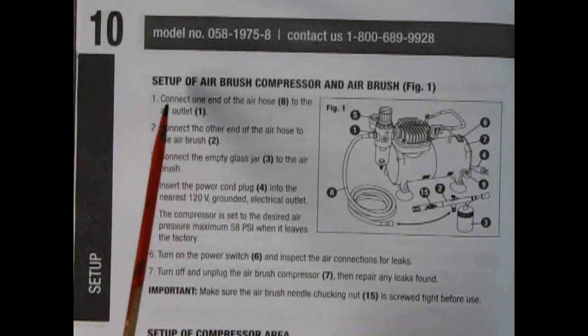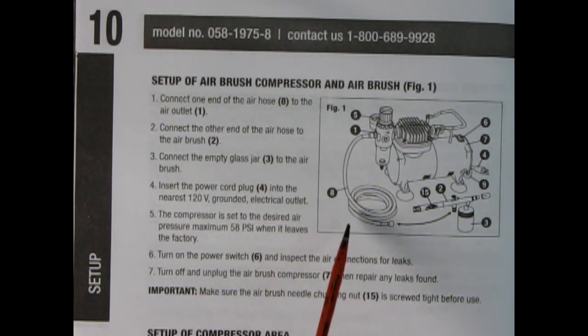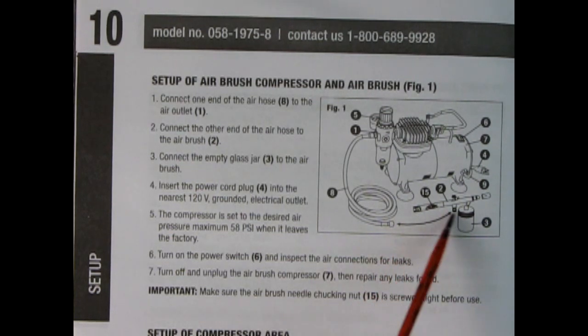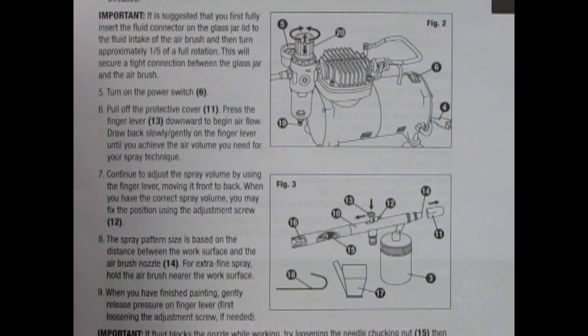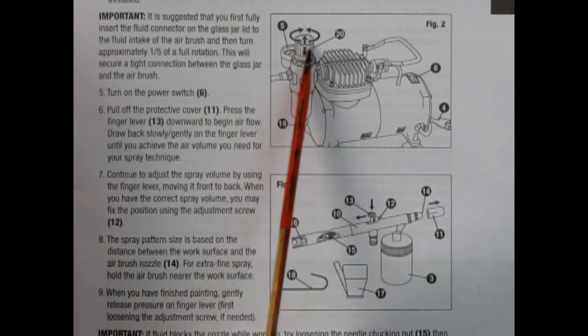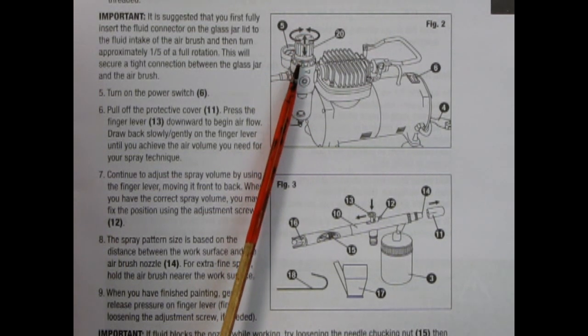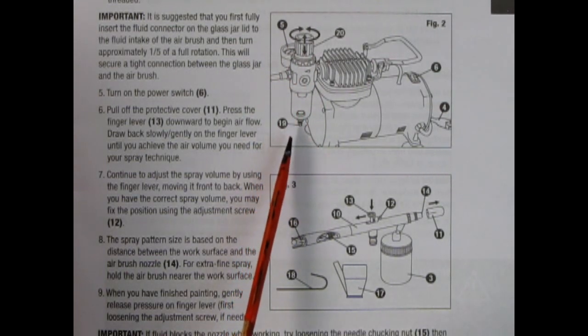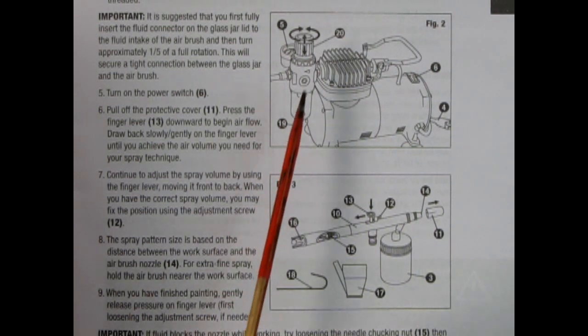On page 10 we have the setup of the airbrush compressor and airbrush. This shows the unit with the air hose screwed on and the plug going into the wall, as well as the airbrush assembled with the glass jar being hooked into the end of the hose. Here are the operating instructions showing you can wind this to adjust the air pressure. It looks like you push it down, almost like a childproof safety cap.